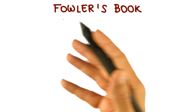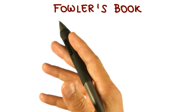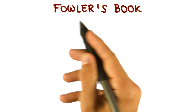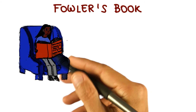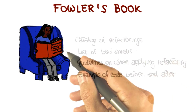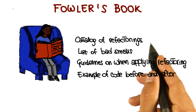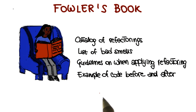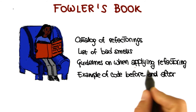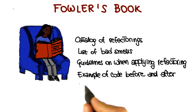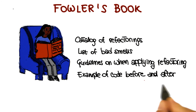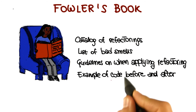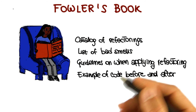Continuing with this historical perspective, one of the milestones in the history of refactorings is the book by Martin Fowler, entitled Improving the Design of Existing Code. It contains a catalog of refactorings, a list of bad smells in code — and we're going to see what that means exactly; nothing to do with other kinds of bad smells. It also talks about guidelines on when to apply refactoring, and very usefully, it provides examples of code before and after applying a refactoring. We're going to use more or less the same style when discussing refactoring in the rest of this lesson.